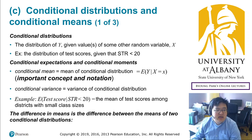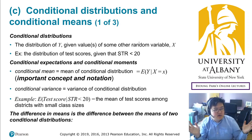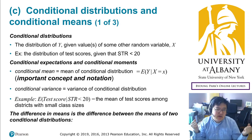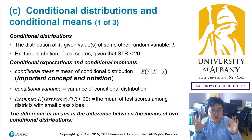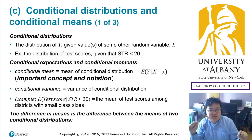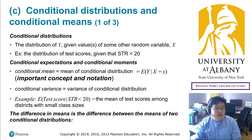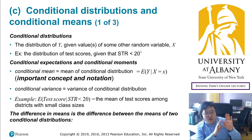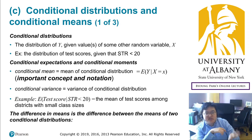For example, the distribution of test scores for small classes will be different from the distribution of test scores for large classes. I would expect small classes will be more effective in educating young students, so test scores are more likely to be higher in small classes than in large classes. This concept can be formulated into conditional distribution — each is conditioned on a different group.